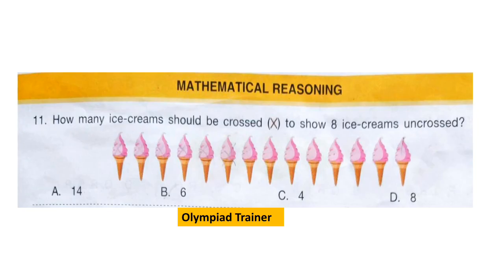The next section is mathematical reasoning. Question 11: How many ice creams should be crossed to show 8 ice creams uncrossed? First count 8 ice creams, then cross out the others and count them. The correct answer is option B: 6. Six ice creams should be crossed to show 8 ice creams uncrossed.